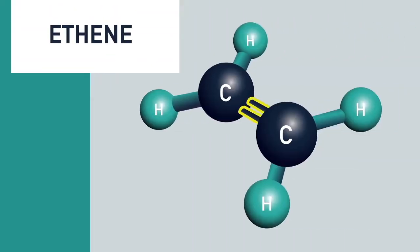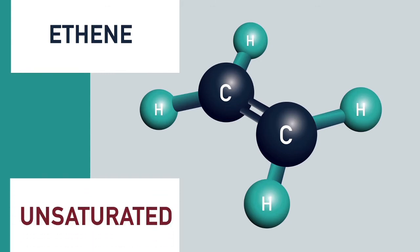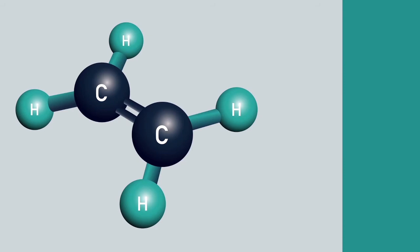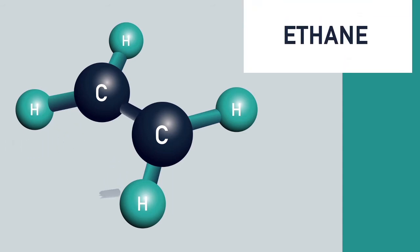When carbon atoms form double and triple bonds between themselves, we say that the compound is unsaturated. The reason for this is that the double or triple bonds can be broken and additional hydrogen atoms can be added to the compound.